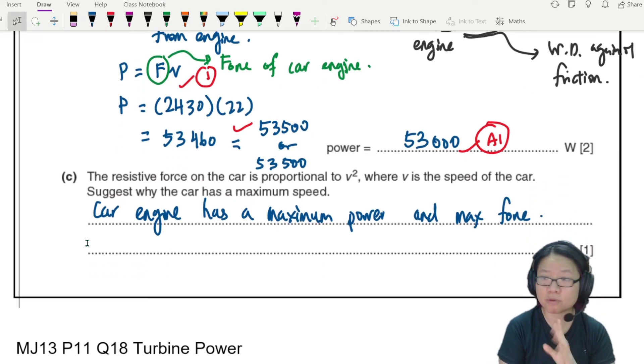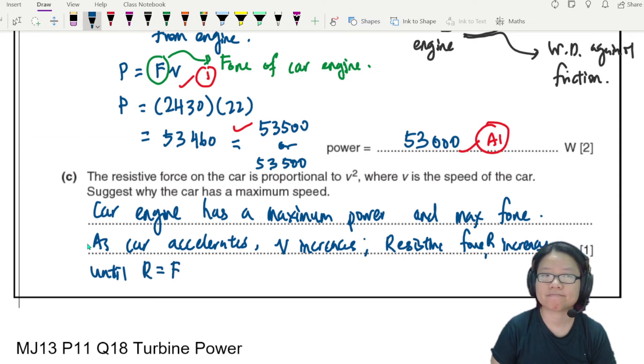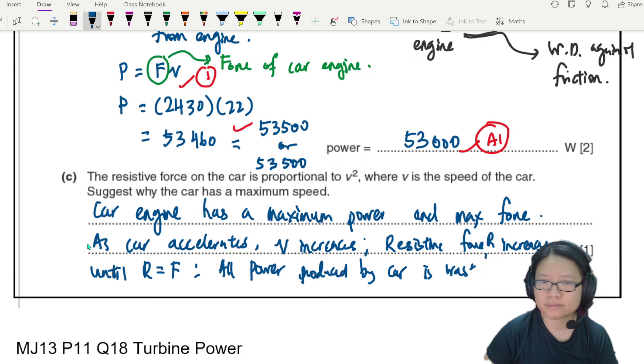and maximum force produced. If you have maximum power and maximum force, as the car accelerates, v increases, speed of the car increases, hence R increases, the resistive force increases. The resistive force until the resistive force R is equal to car engine force F, then all the power produced by the car is wasted